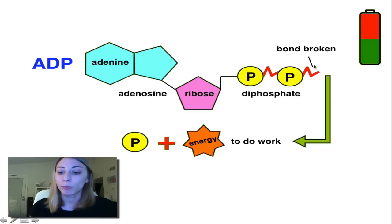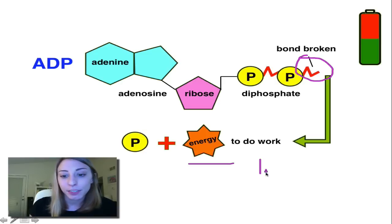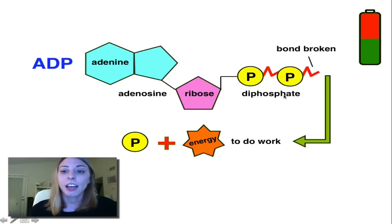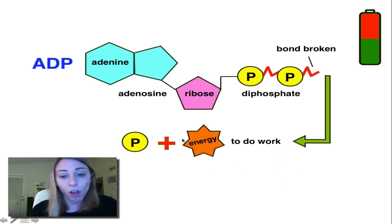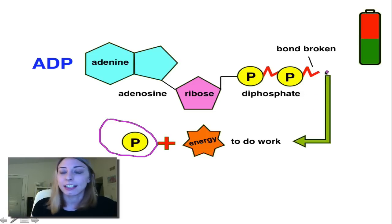We've broken the bond here and released energy. That energy can go on to do work — whether we need to lift something, run a marathon, breathe, or think. Whatever it is, that energy can go on to do that. We're also going to be left with an additional free phosphate because it has now left the ATP.